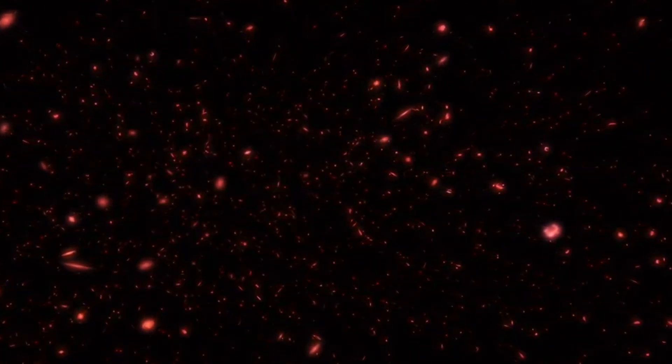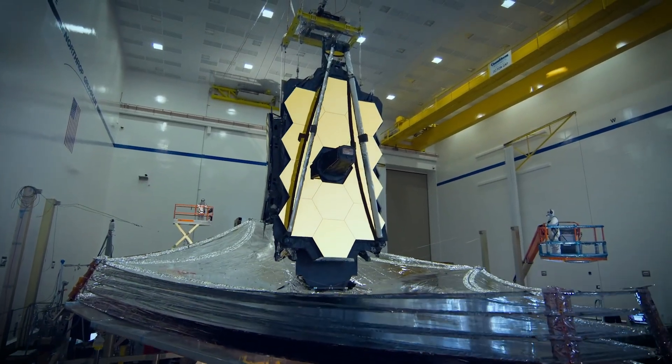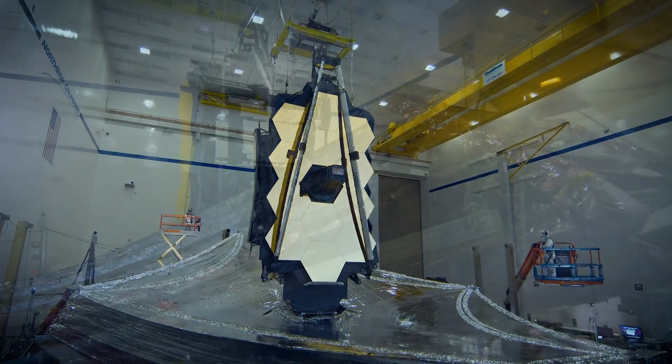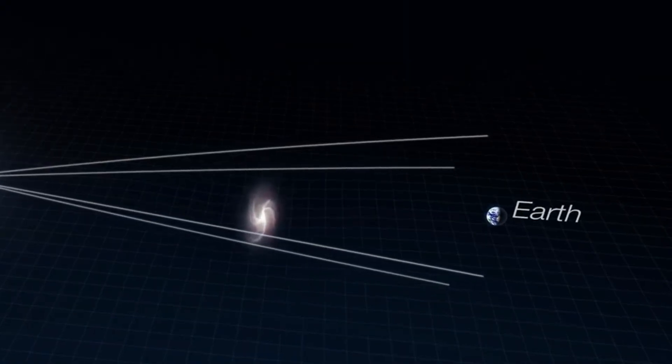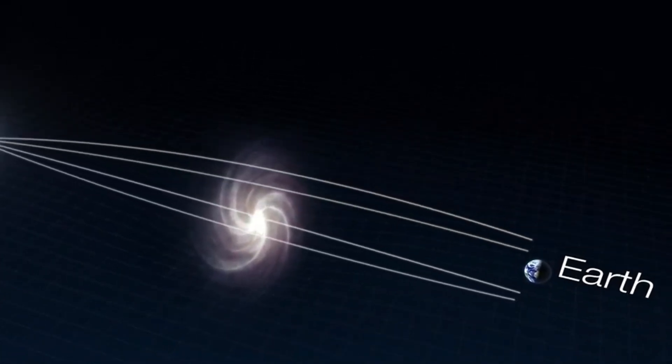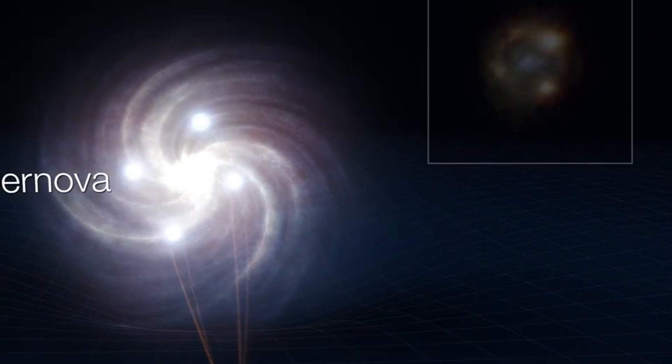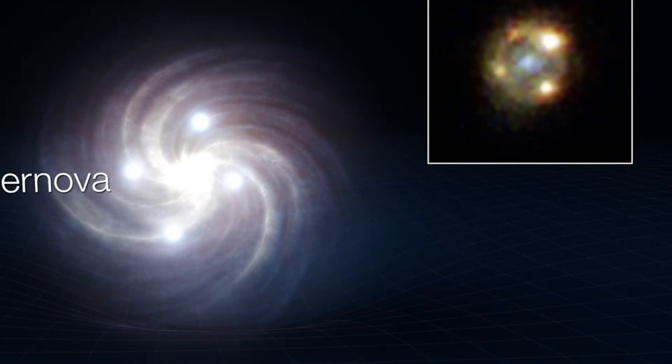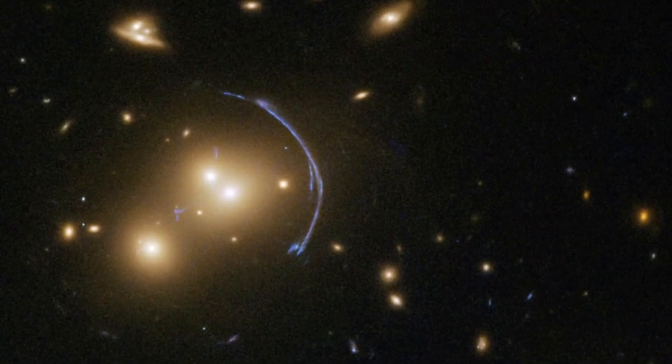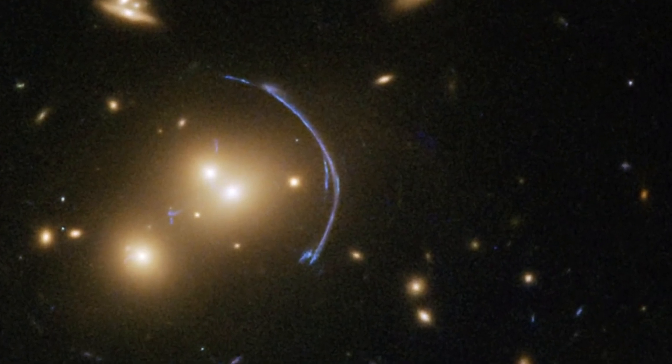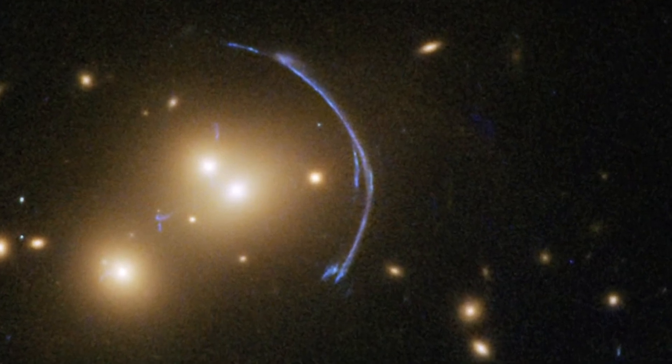The star is discovered by Webb's NIRCam instrument to be a big B-type star that is around a million times as bright and more than twice as hot as our sun. Earendel is part of the Sunrise Arc galaxy. This far-off star is now visible to scientists thanks to gravitational lensing because of Earendel's fortunate alignment behind a wrinkling in space-time caused by a huge galaxy cluster. Both Hubble and Webb were able to identify it.